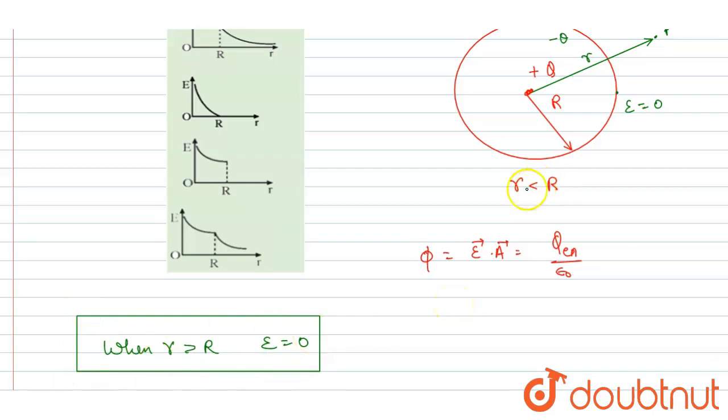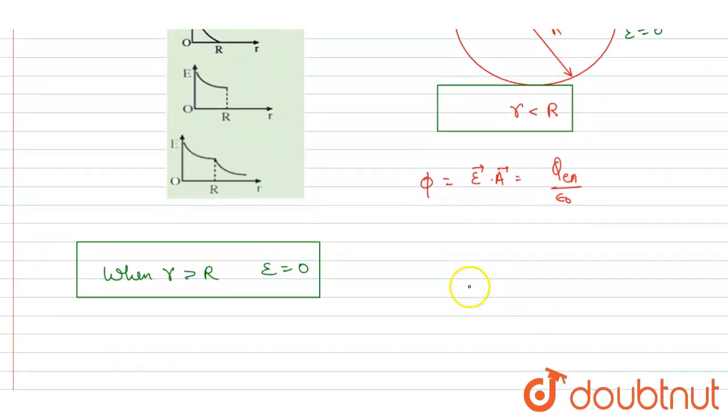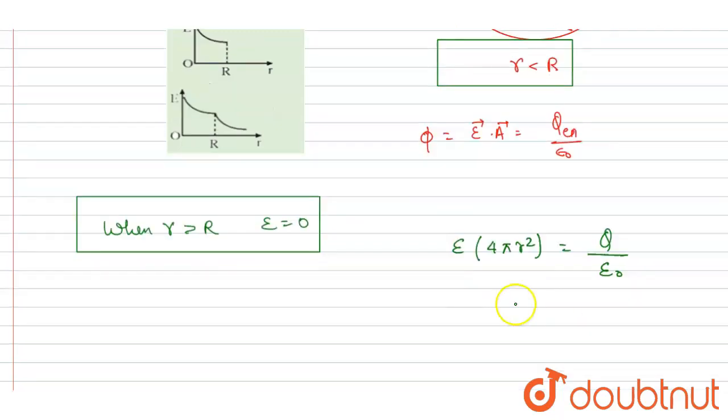So what about the r less than R point? For r less than R, if you see here, the charge enclosed will be Q, right? So I will write, since both are parallel, so I will directly multiply charge enclosed is Q divided by epsilon naught. So you got the field as this, it is inversely related with r square, for r less than R.